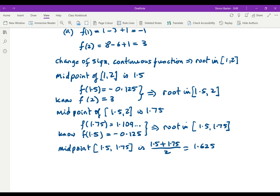So now we look at f of 1.625. Pressing the buttons on the calculator that gives you 0.416. We know from above that f of 1.5 is minus 0.125. We've got a change of sign.